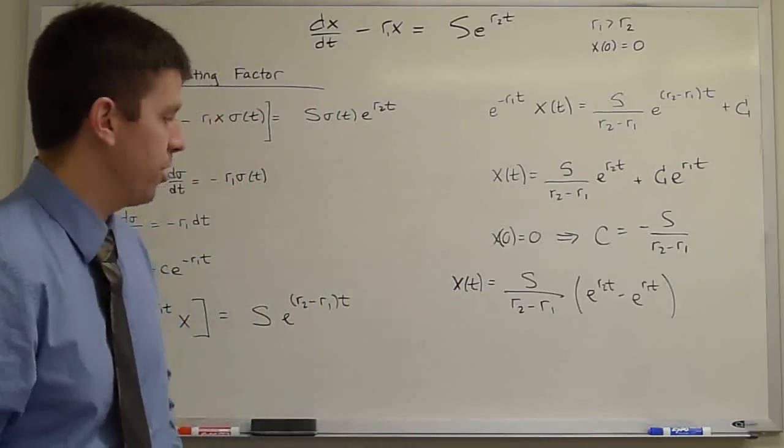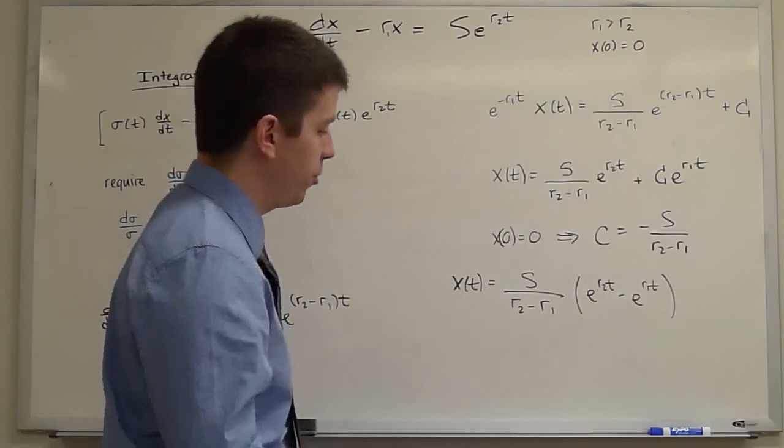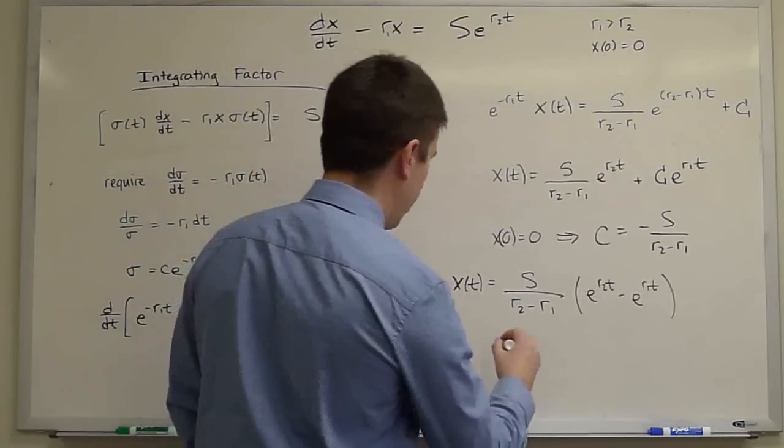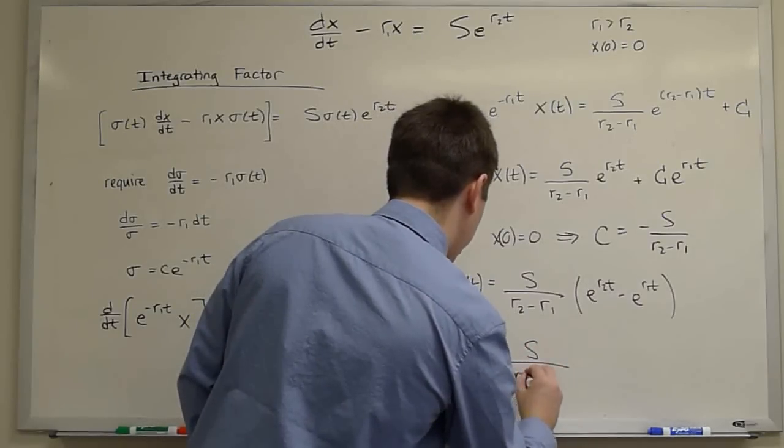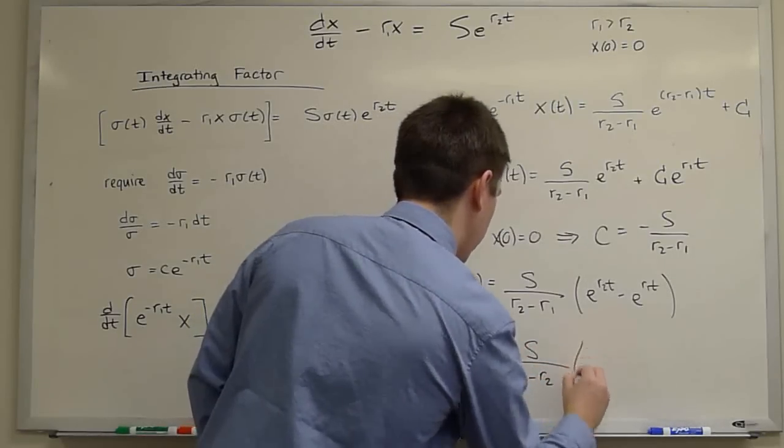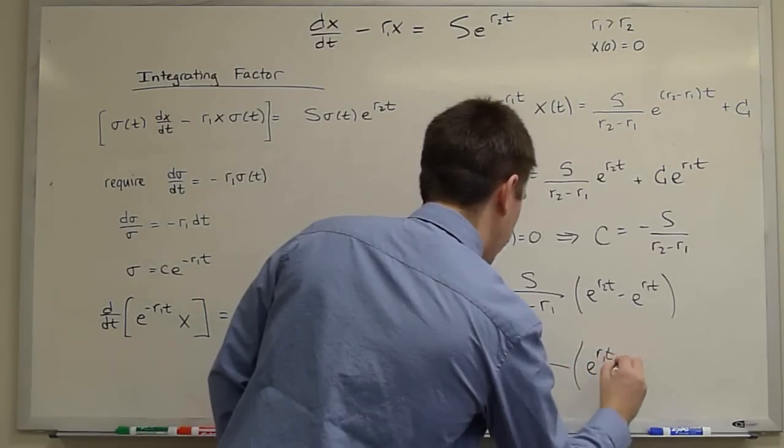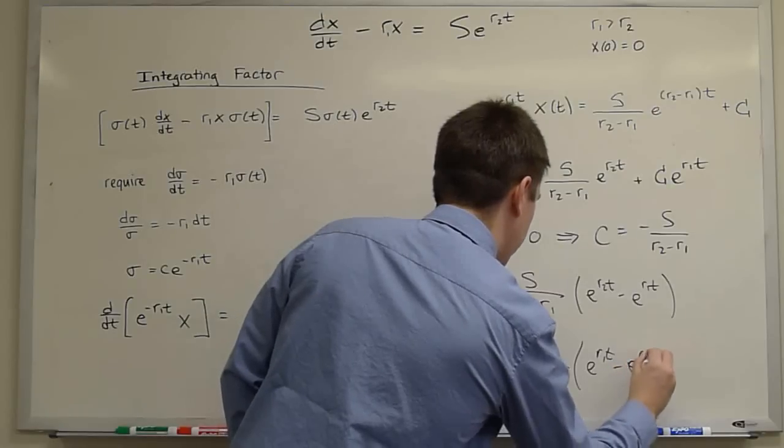And if you like, as we saw before, since r1 is greater than r2, you can multiply top and bottom by negative 1 and get the equivalent representation s over r1 minus r2 times e to the r1 t minus e to the r2 t.